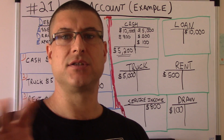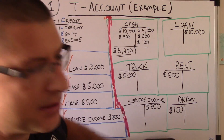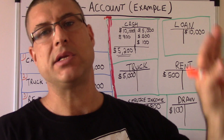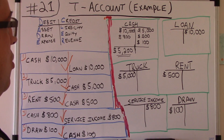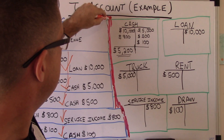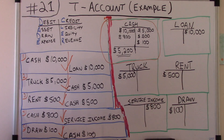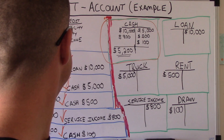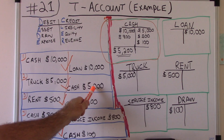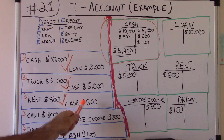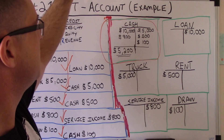In Accounting for Beginners number 5, I skipped the t-account, skipped the trial balance, and went straight to the income statement — I skipped so much. And I got so many questions asking how I got cash to be $5,200. That's because I just said 10,000 minus 5,000 minus 500 plus 800 minus 100, and that confused everybody. So let me show you how I got that.